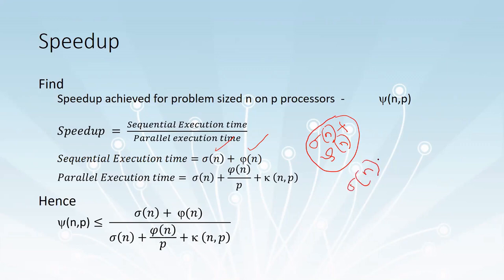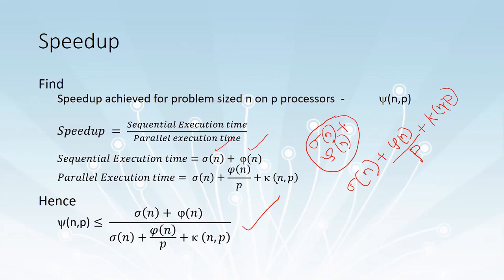The sequential code requires the same time in parallel execution because it cannot be executed in parallel. The parallel portion's execution time is divided among p processes. The third term, kappa of n, p, is the time required for these processes to communicate with each other. So finally, psi of n, p is less than or equal to sigma of n plus phi of n, divided by sigma of n plus phi of n over p, plus kappa of n, p.